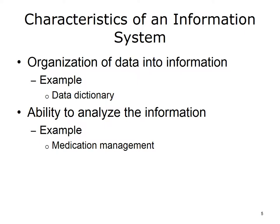An example of how data may be organized is via a data dictionary. AHIMA defines a data dictionary as a descriptive list of the names, definitions, and attributes of data elements to be collected in an information system or database, whose purpose is to standardize definitions and ensure consistent use, being a central repository of information about stored data, used to help organize the data. Using a handheld barcode reader that registers each medication, a nurse would use information systems to verify the correct medication was ordered and document the actual administration of the medication.